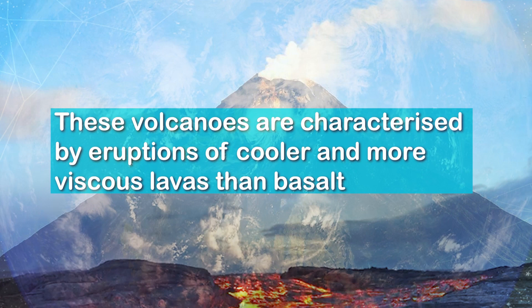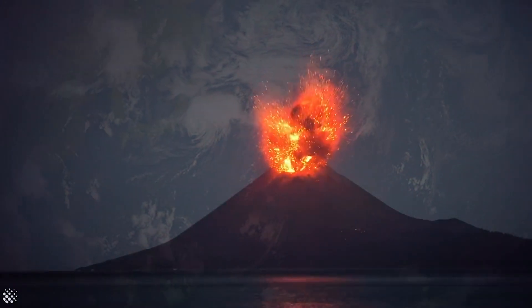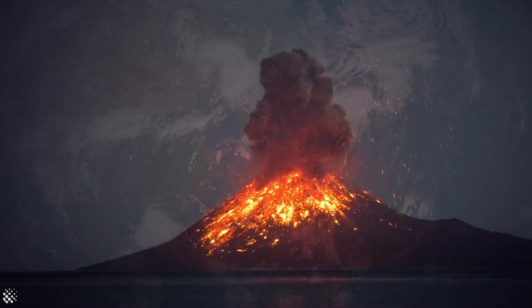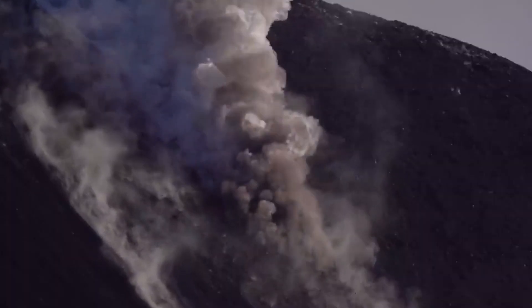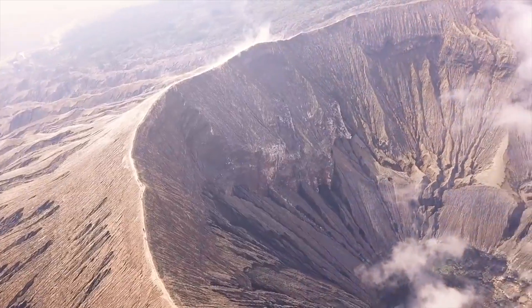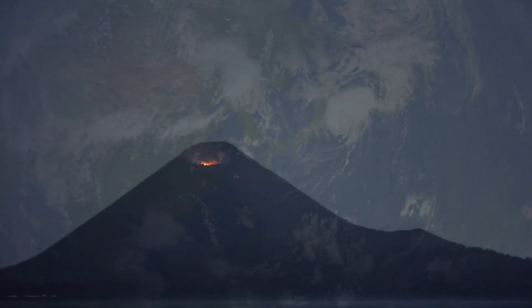The second type of volcanoes is composite volcanoes. These are characterized by eruptions of cooler and more viscous — that is, thicker — lavas than basalt. These volcanoes often result in explosive eruptions. Along with lava, large quantities of pyroclastic material and ashes find their way to the ground. This material accumulates in the surrounding areas of the vent openings, leading to the formation of layers, and this makes the mounds appear as composite volcanoes.